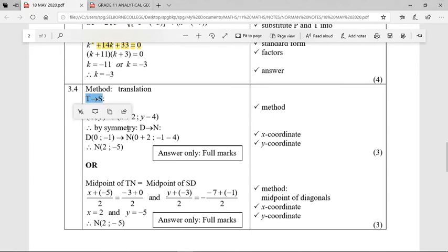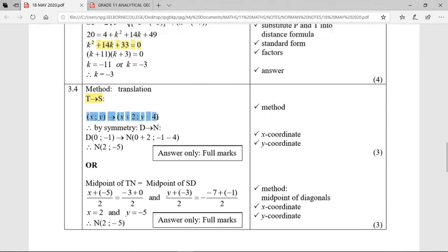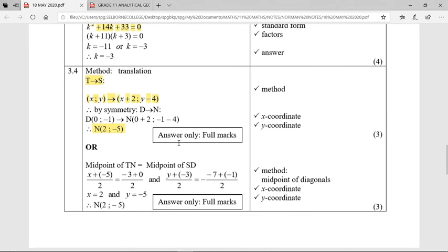Let's go see if we are correct. And that's what it's saying here. T to S is 2 right and 4 down. That's what that symbol is saying, 2 across and 4 down. So then D to N must be 2 across and 4 down. So from 0 to negative 1, 2 across is therefore 0 becomes a 2 for N, and 4 down from negative 1 is negative 5 as a y value for N. That is the simplest way to find your answer. I'm going to show you the second way, though.